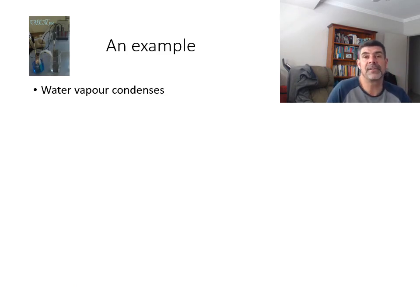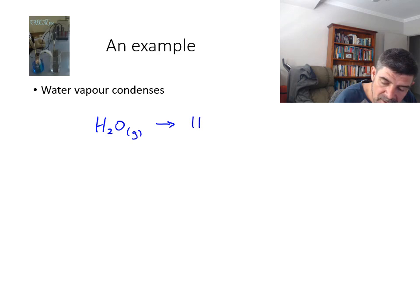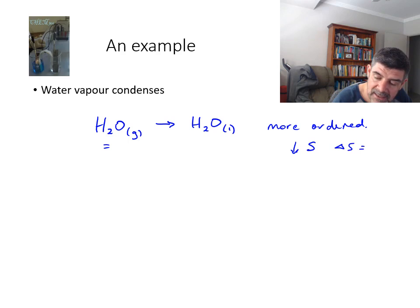So the simplest thing for us to look at here is water vapor condenses, which means H2O gas goes to H2O liquid. Now one of the ways that we can do this is to simply say that the particles of the gas are going to take up more space, and therefore when you compress them together, when they get closer together in the liquid form, we're going to become more ordered, and therefore we're going to decrease our entropy, or delta S is negative.